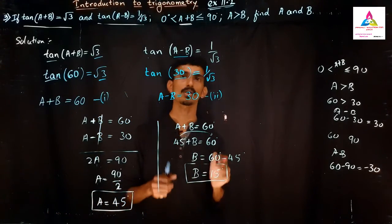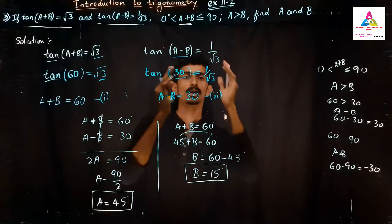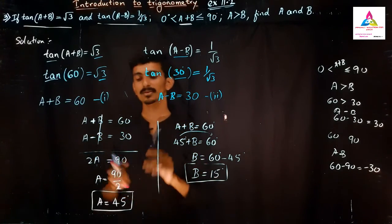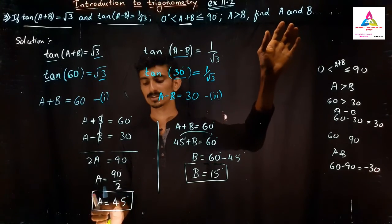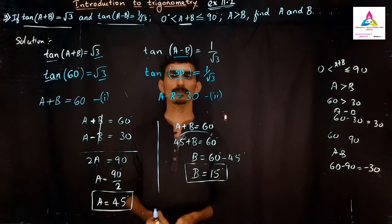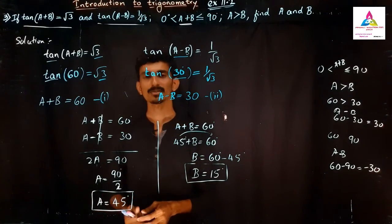So I have told it is a combination of trigonometry function along with the linear equation. And this is our answer. Find the A and B. A value is 45, and B value is 15. I hope you all have got this answer.